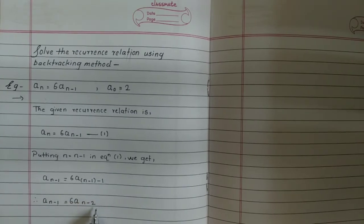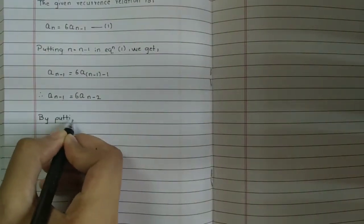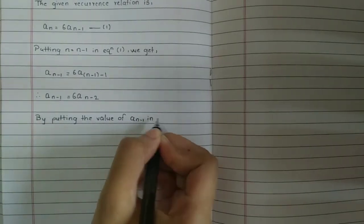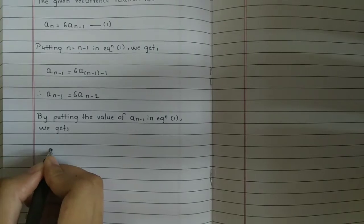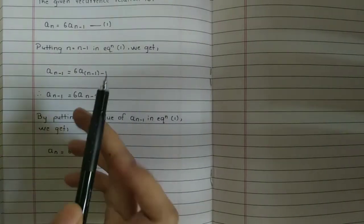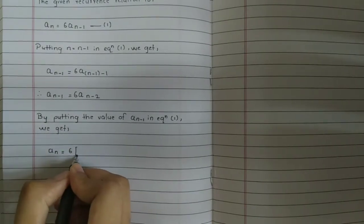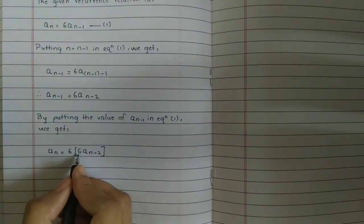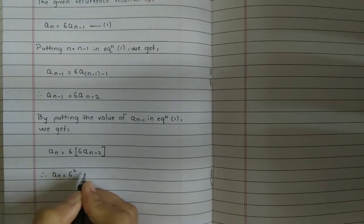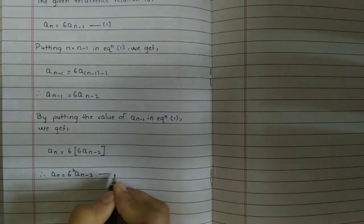We now substitute this value of aₙ₋₁ into equation number 1. By putting aₙ₋₁ equals 6aₙ₋₂ into equation 1, we get aₙ equals 6 times 6aₙ₋₂. Since 6 times 6 equals 6 squared, we get aₙ equals 6² aₙ₋₂. We call this equation number 2.